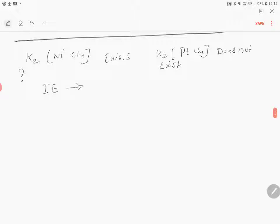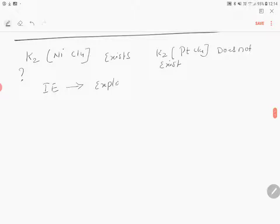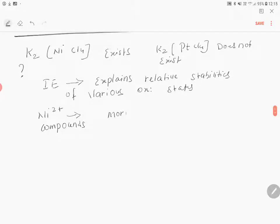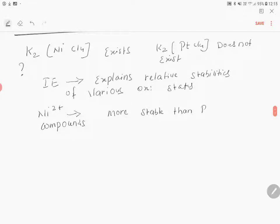Ionization energy explains the relative stability of various oxidation states. For example, nickel 2-plus compounds are more stable than platinum 2-plus compounds.